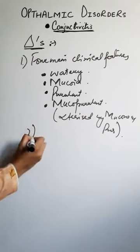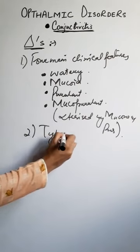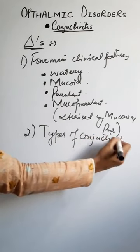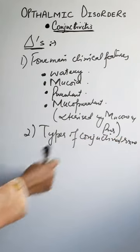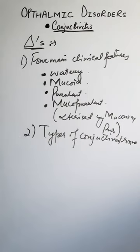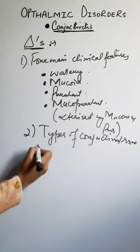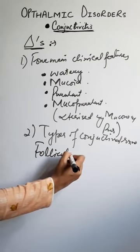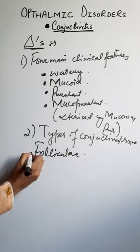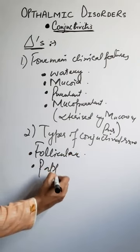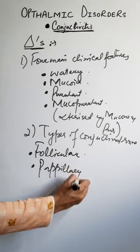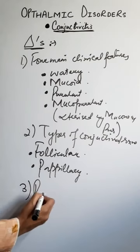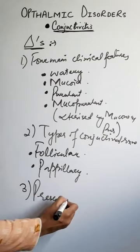That is characterized by both mucus and pus discharge. Number two, we will see the types of conjunctivitis reactions — for example, follicular and papillary. Based on this we will see whether follicles are present or not, and whether papillary-like structures are present or not.